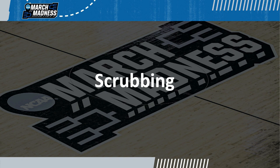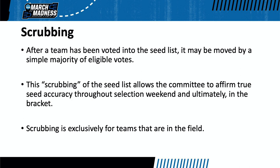Remember how we said that the seed list changes over the course of the week? That's because several times over the course of the week, the committee goes through what is affectionately known as the scrubbing process. Scrubbing only takes place with teams that have already been placed on the seed list, and its purpose is to ensure the committee is completely comfortable with the order of teams. Remember, the seed list serves as the committee's ranking of all 68 teams in order from top to bottom. Only after the list is fully scrubbed can the bracketing process begin.